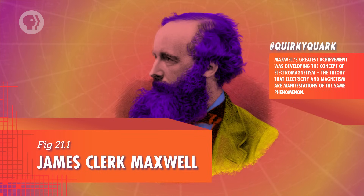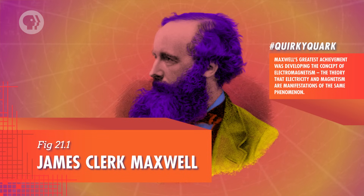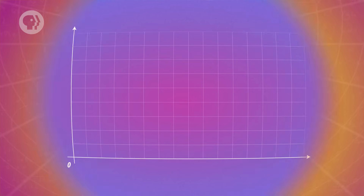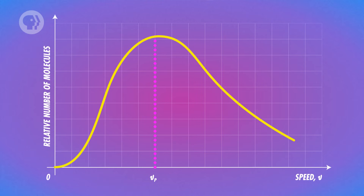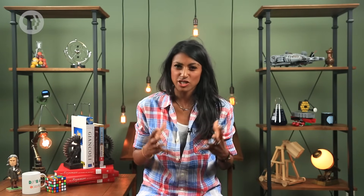Back in 1859, Scottish physicist James Clerk Maxwell used statistical analysis to figure out the distribution of speeds in an ideal gas. The top of the curve shows the speed closest to the greatest number of molecules, and the root-mean-square speed is slightly to the right of that. So the molecules in an ideal gas can actually have a whole range of different speeds, but most of them are pretty close to the root-mean-square speed, making it a useful way to picture how fast a gas's molecules are moving.